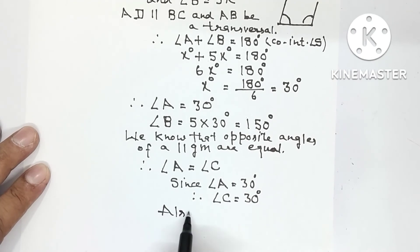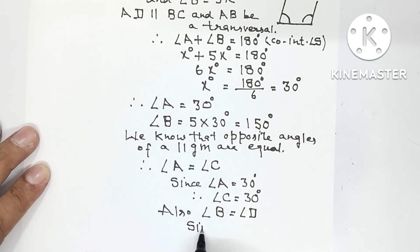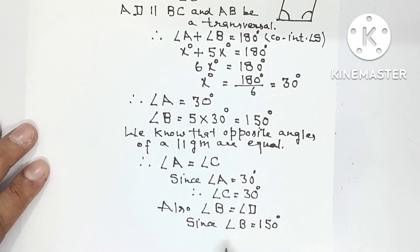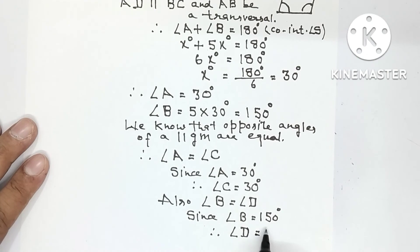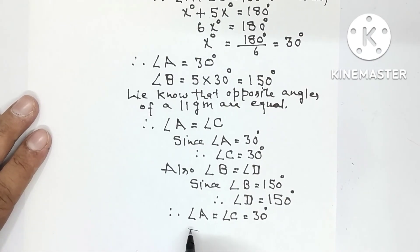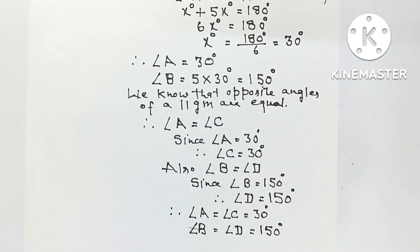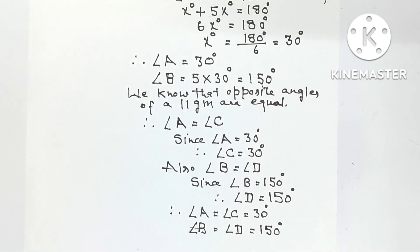Also, angle B = angle D, because opposite angles of a parallelogram are equal. Since angle B = 150 degrees, angle D = 150 degrees as well. So the final answer is: angle A = angle C = 30 degrees and angle B = angle D = 150 degrees. That was the solution to question number 4. Hope you have understood it — thank you.